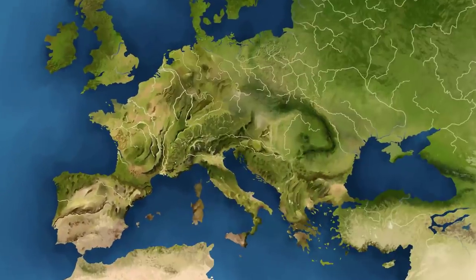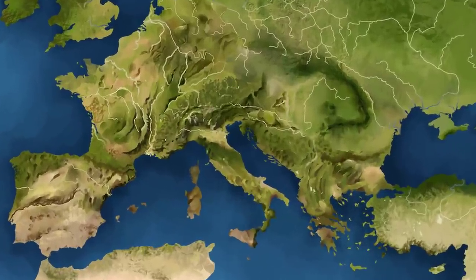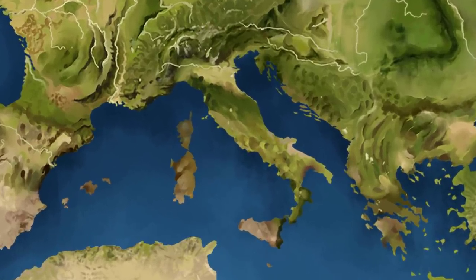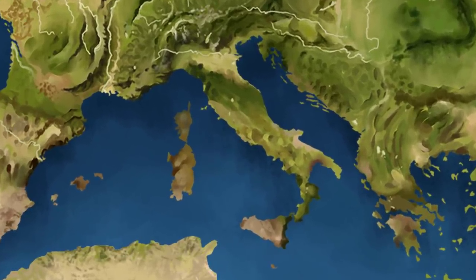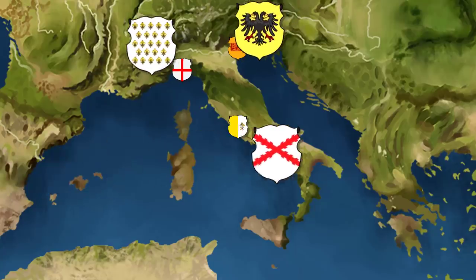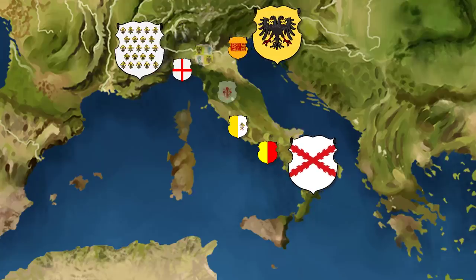Let's take a look at the state of Italy before unification. Like the ancient Greeks, Italians have historically identified with their respective city-states as opposed to a distinct Italian nationality. These city-states were often governed by foreign powers, but by the dawn of the Renaissance, a number of independent regional states emerged.